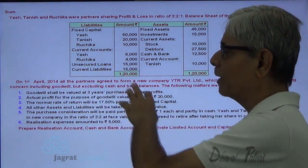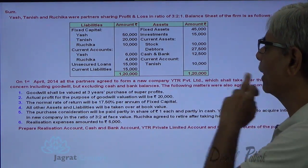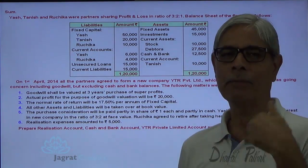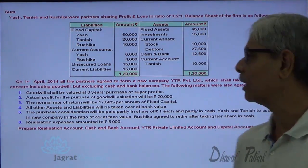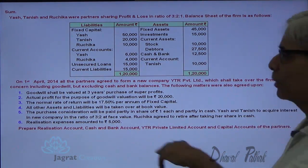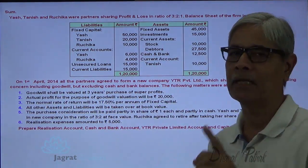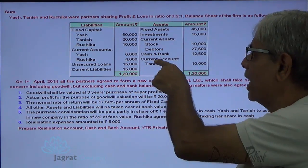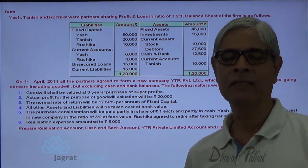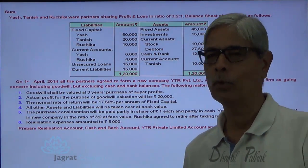On 1st April 2014, all the partners agreed to form a new company, YTR Company Limited. The partnership firm is converted into a company which shall take over the firm as a going concern including goodwill but excluding cash and bank balance. So this cash and bank balance of 12,500 is not purchased by the new company — that is an important point to be noticed.